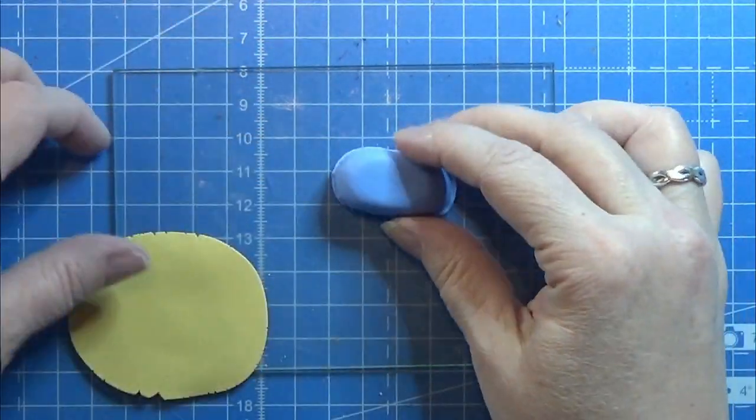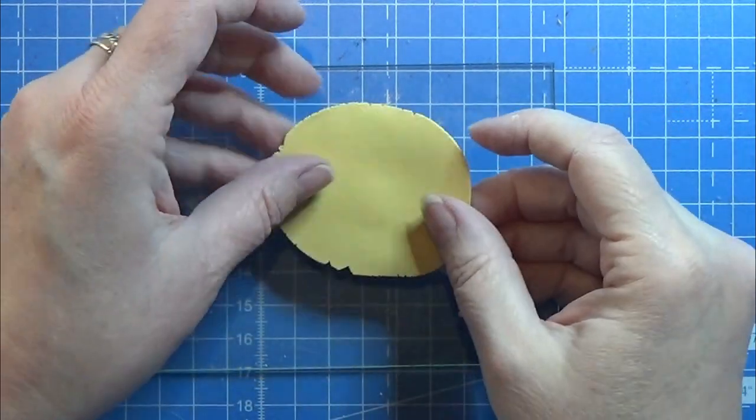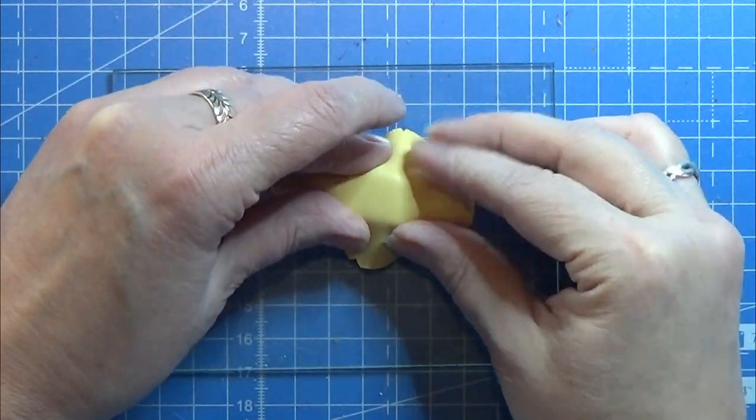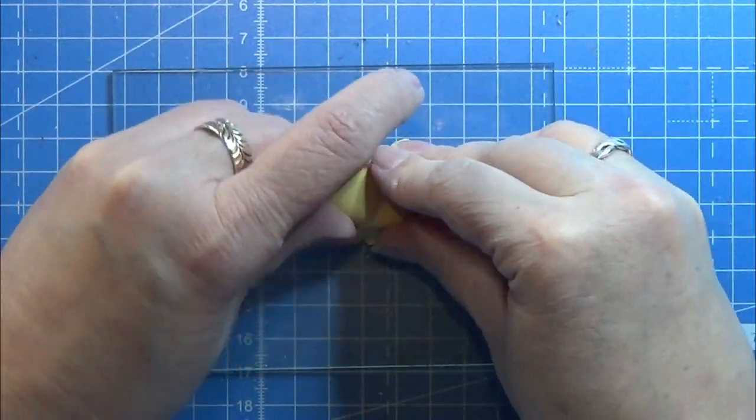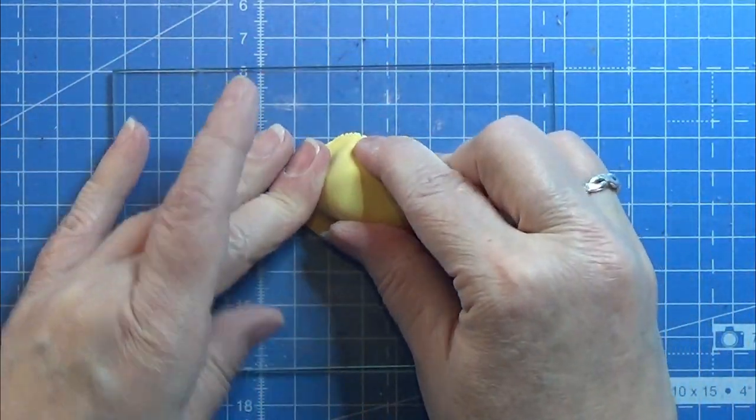So I have this mold, it is made of silicone. It's a mold putty and I just shaped the mold putty into the shape I wanted it to and let it harden.